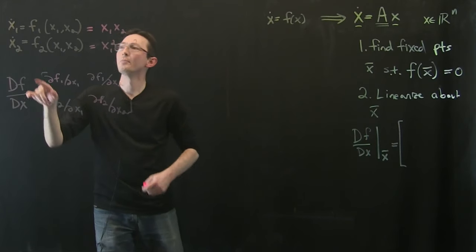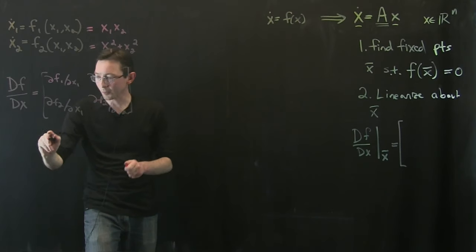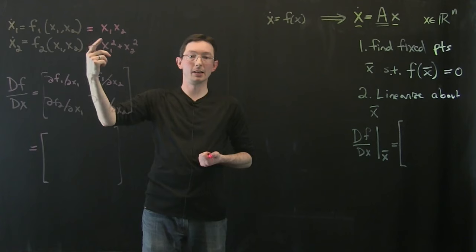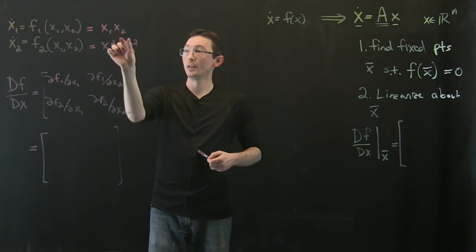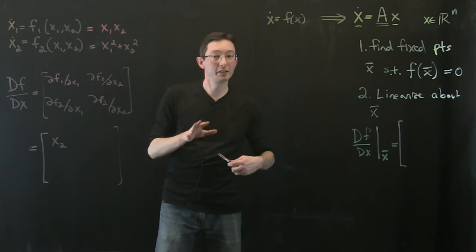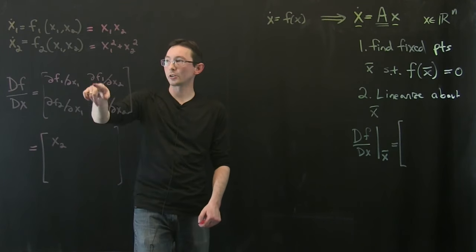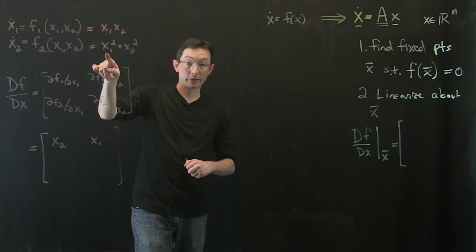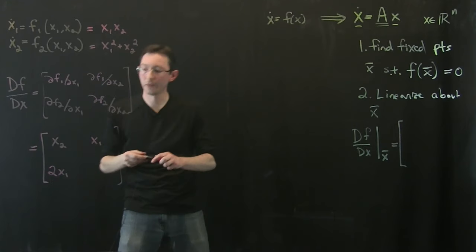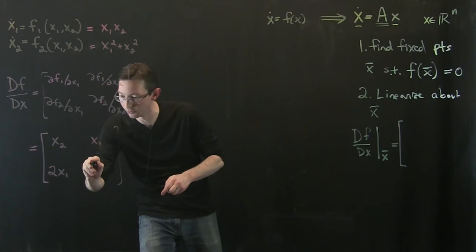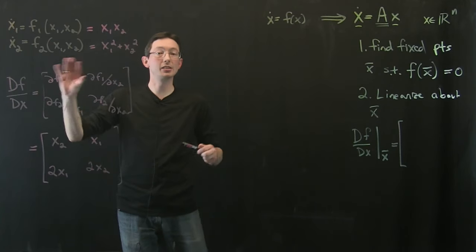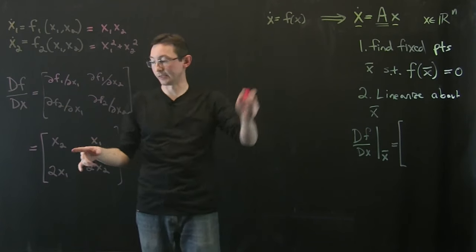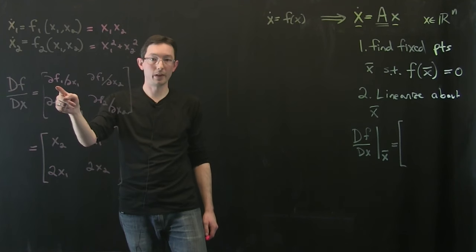For a simple example, let's say f1 equals x1 times x2 and f2 equals x1 squared plus x2 squared. The Jacobian matrix: partial f1/partial x1 is x2, partial f1/partial x2 is x1, partial f2/partial x1 is 2x1, and partial f2/partial x2 is 2x2. This matrix is called the Jacobian of the dynamics with respect to the state x - each term is a partial of the dynamics with respect to one of the variables.